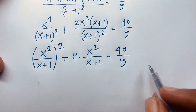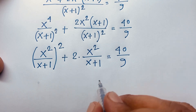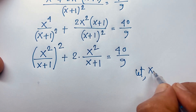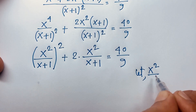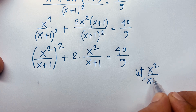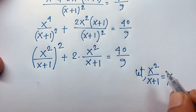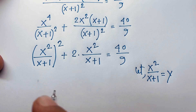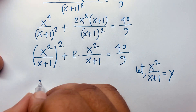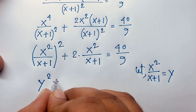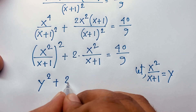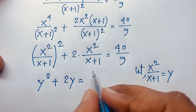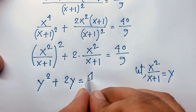Now both terms contain x²/(x+1), so let y = x²/(x+1). The equation becomes y² + 2y = 40 over 9.